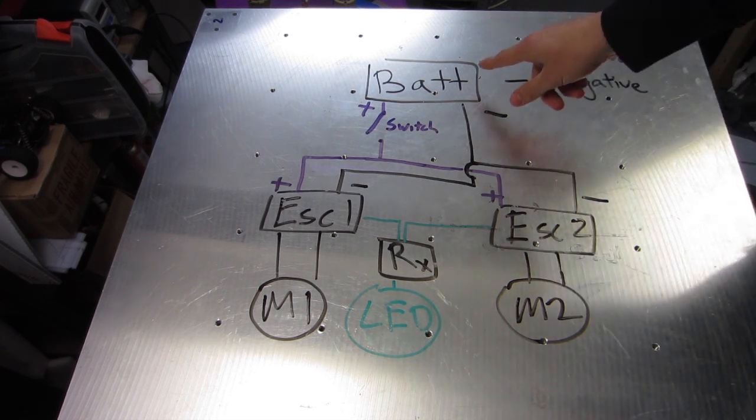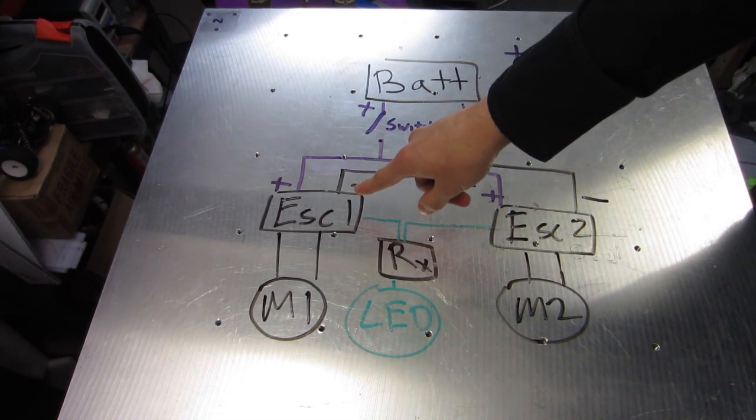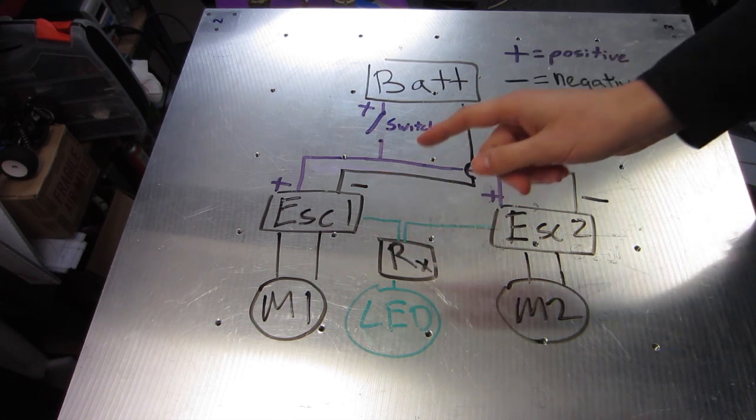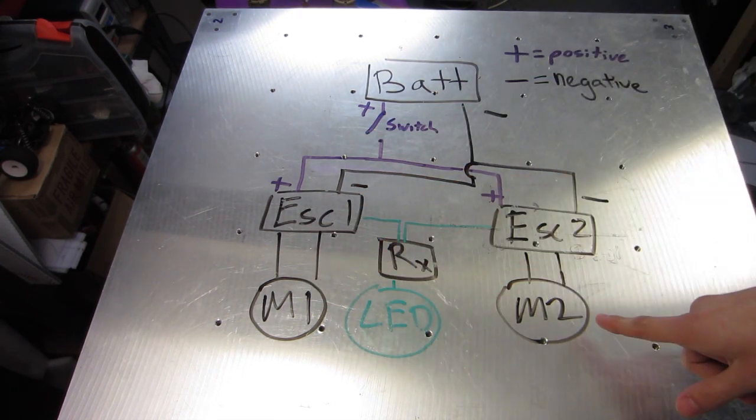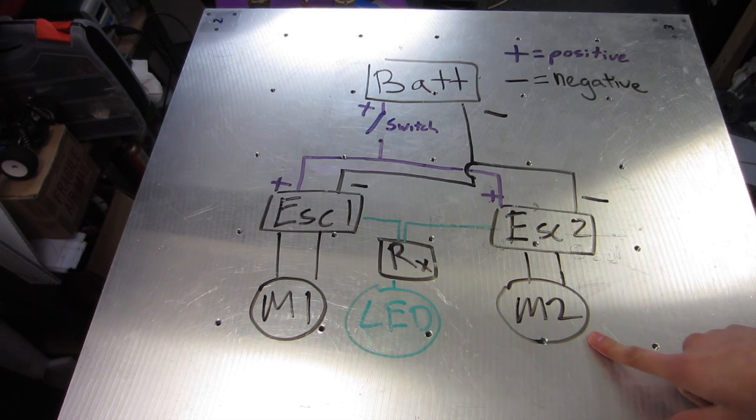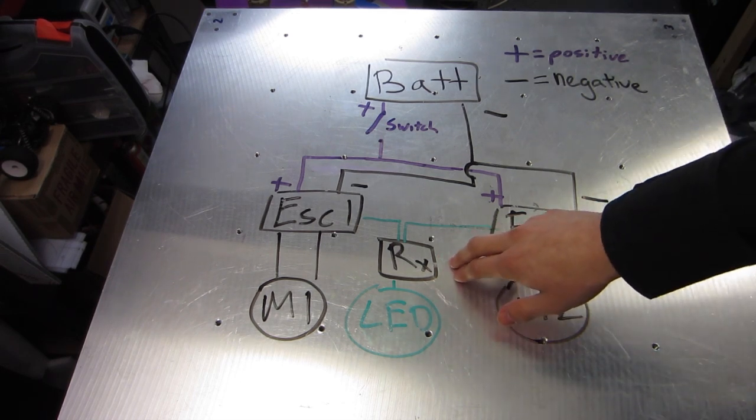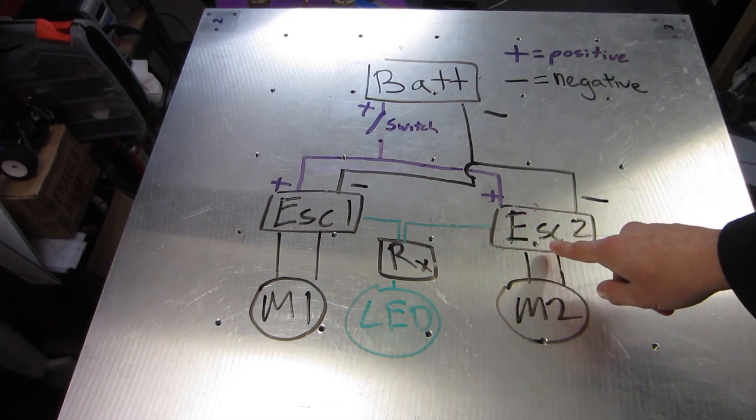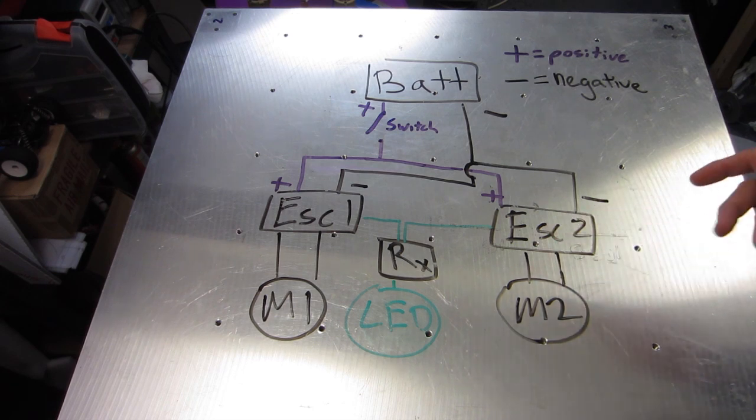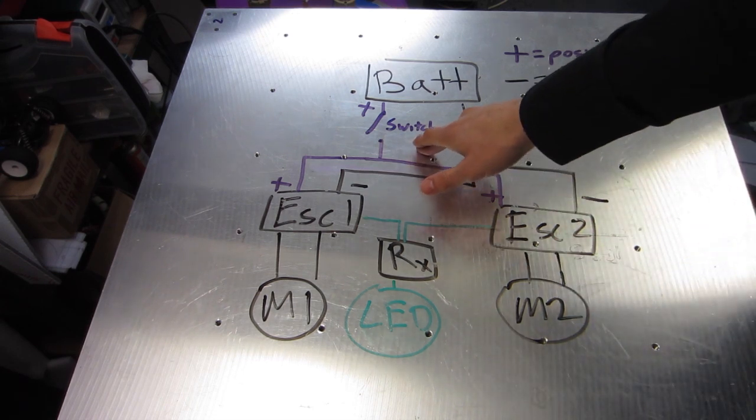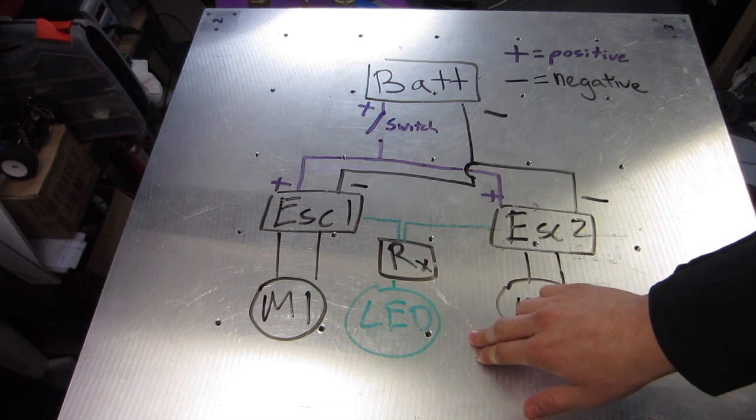You have your battery, your speed controllers (ESCs), your drive motors—this one has two drive motors—your receiver which controls your ESCs, and finally for safety, you have a main power switch and an LED light so you can always see when your machine's on.